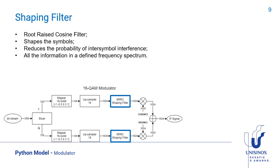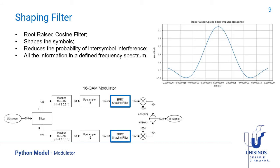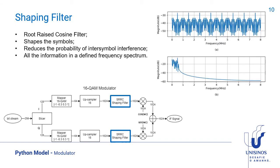In the shaping filter block, a square root raised cosine filter with roll-off of 0.35 is implemented to give the symbols a shape. Besides that, you can see in this FFT, before and after the filter, that it takes all the information that was spread in the frequency domain and puts it in a defined spectrum.